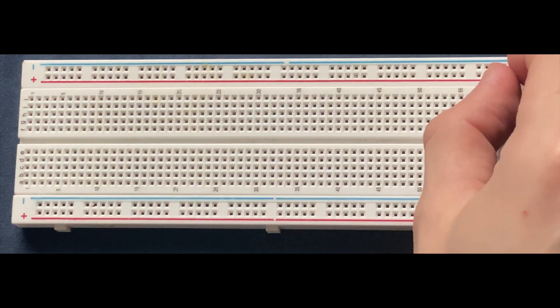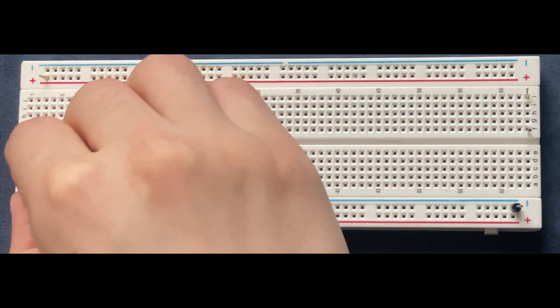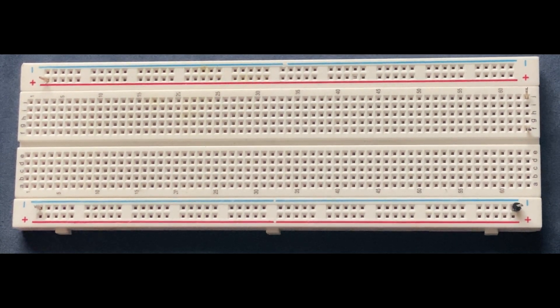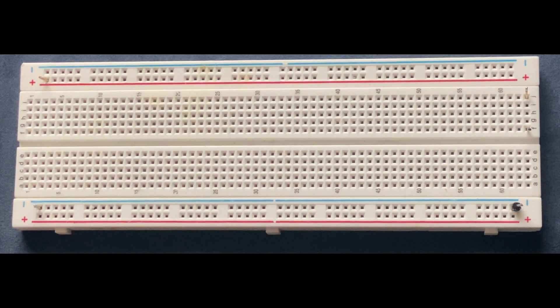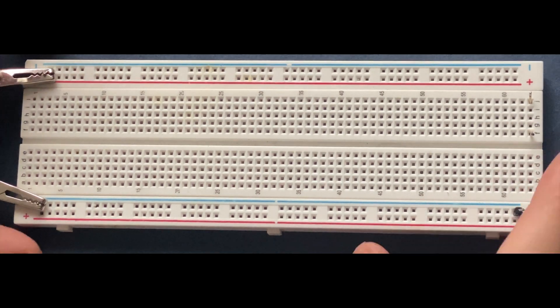Let's start by connecting the function generator to the circuit. Here are my breadboard pins: one goes to the positive rail and another to the negative rail. Then I'm going to connect my function generator to the rails of the breadboard.